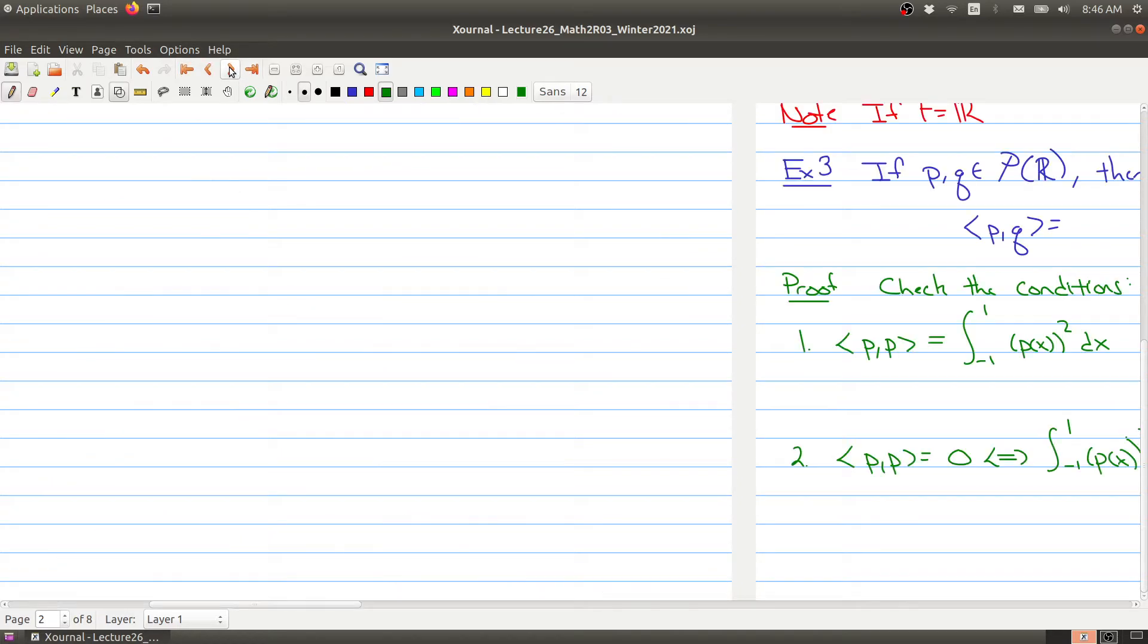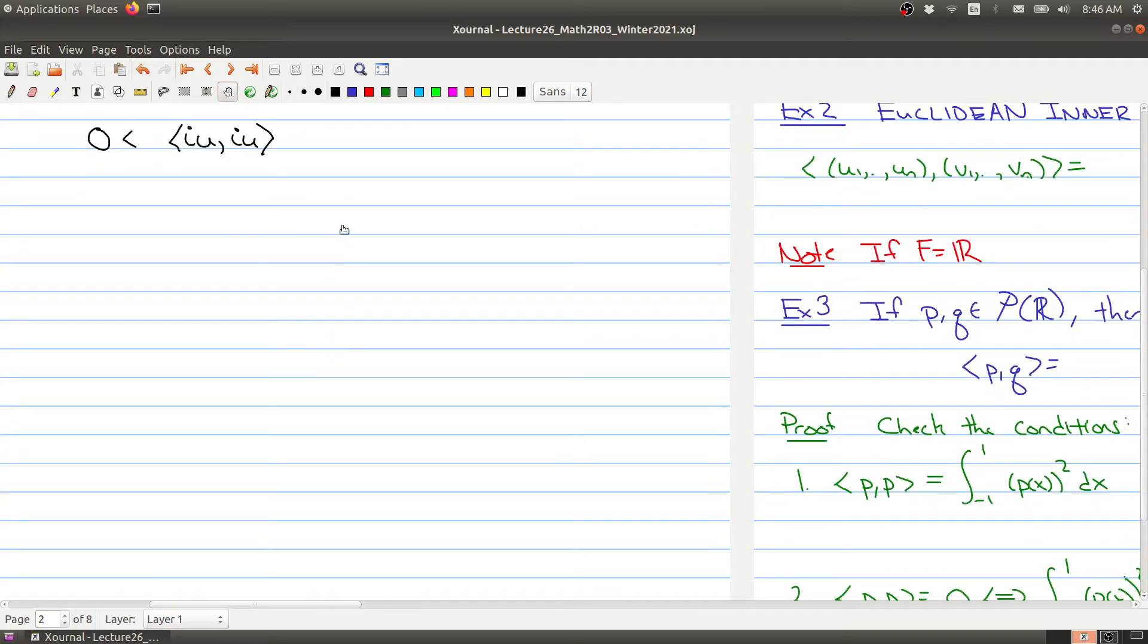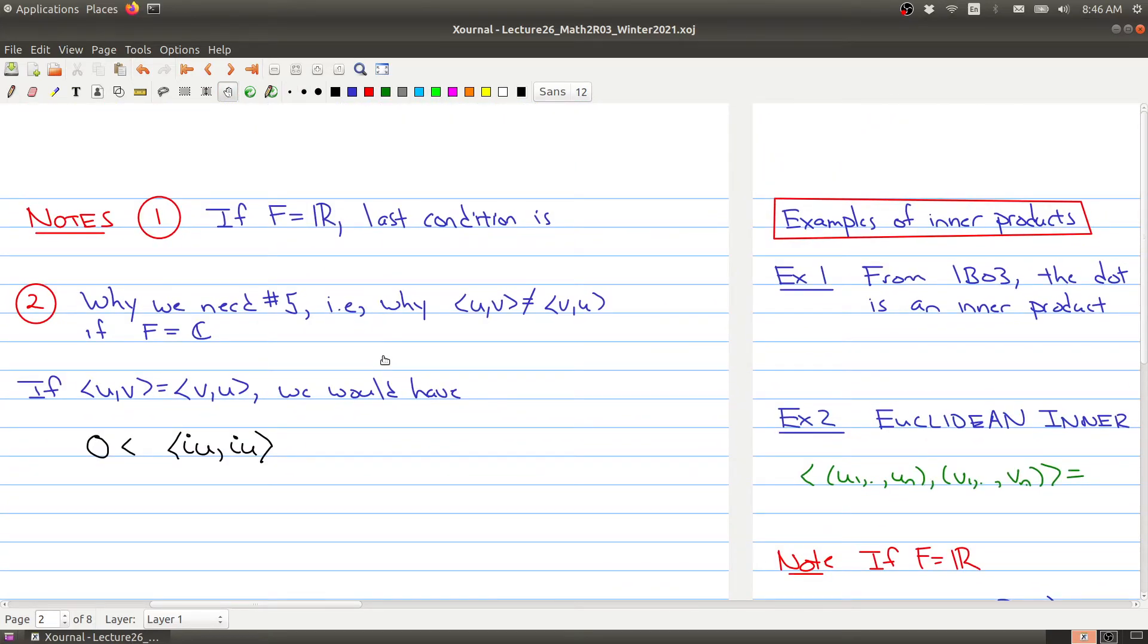And we will see some examples in the next part of today's lecture, but let me just point out a couple things. First of all, if our field had been the real numbers, then the last condition is really just saying that you can switch the order around.